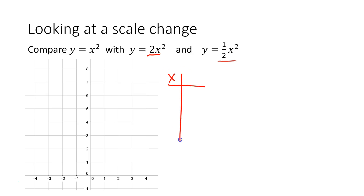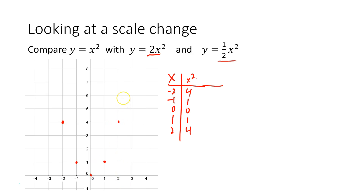Let's make a table. We've got x and x². Running x values from negative 2 to 2: negative 2, negative 1, 0, 1, 2. Squaring those gives us 4, 1, 0, 1, 4. Plotting those points — (-2,4), (-1,1), (0,0), (1,1), (2,4) — and graphing that parabola, it looks like this.